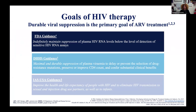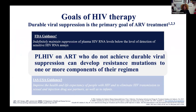The goals of HIV therapy include durable viral suppression. We have FDA, DHHS, and recent IAS-USA guidance on this. When people living with HIV do not achieve durable viral suppression, they can develop resistant mutations to one or more components of the regimen. This is the reason why we are here.